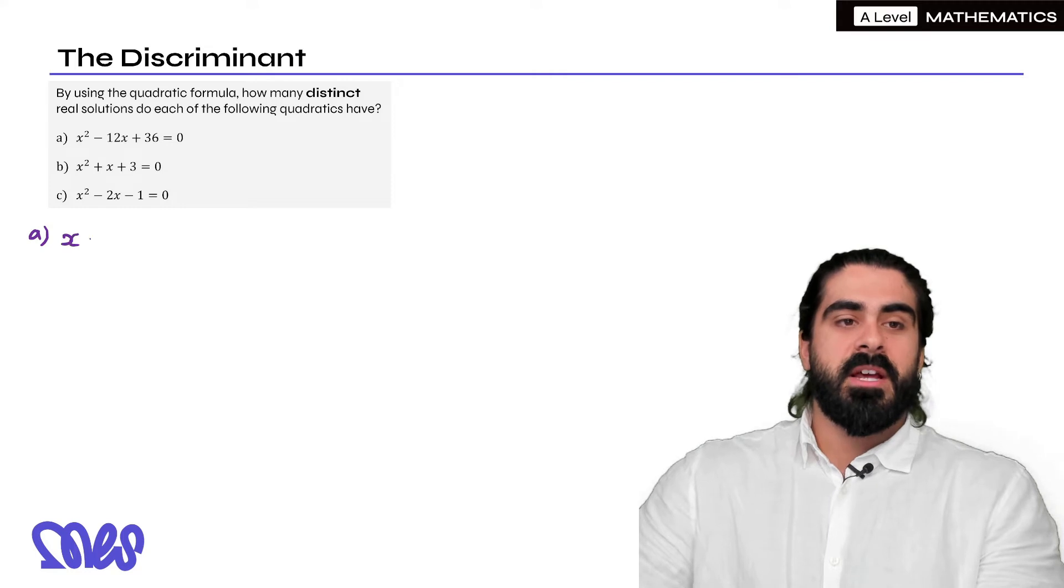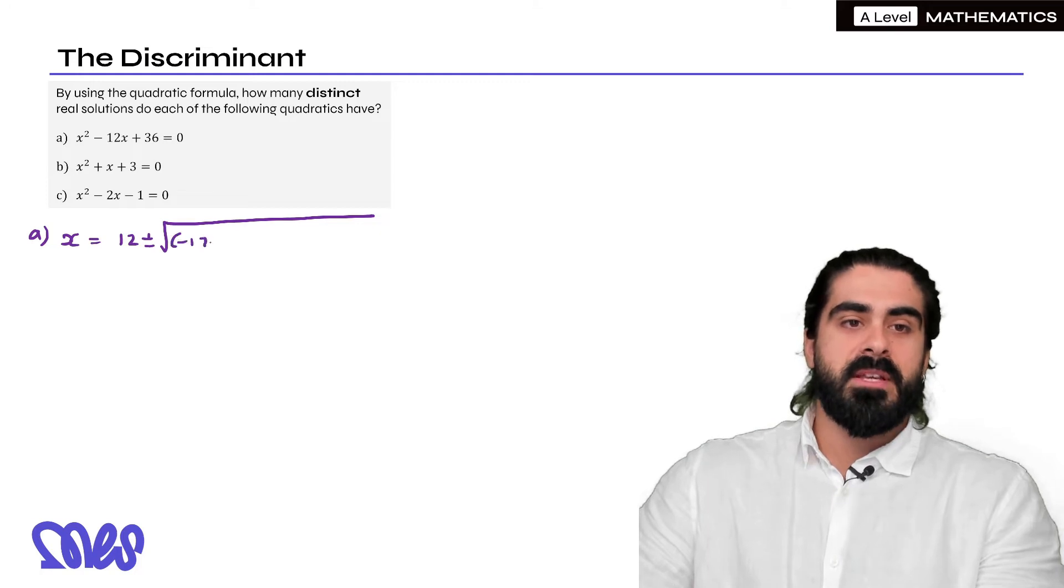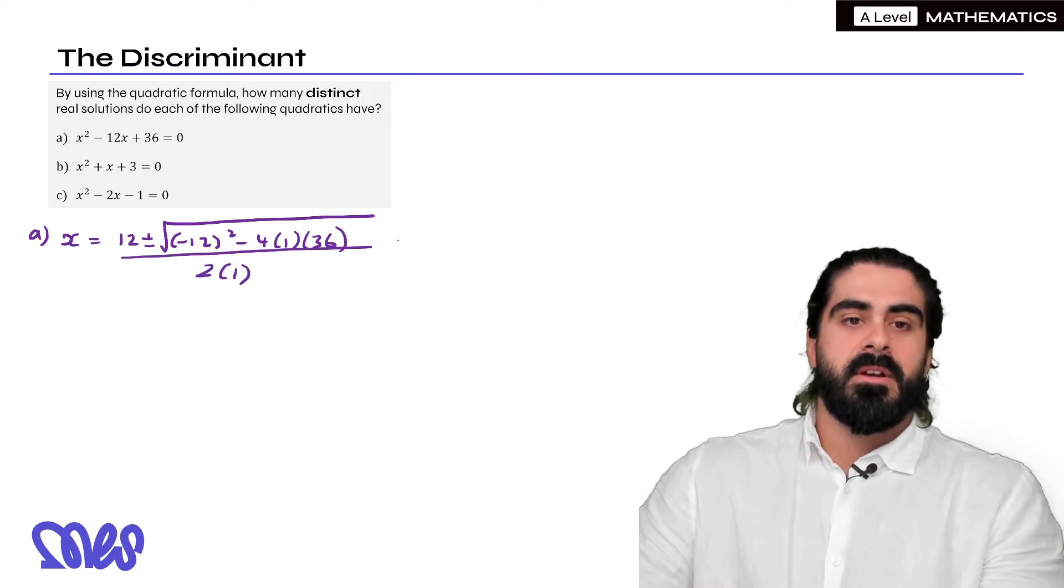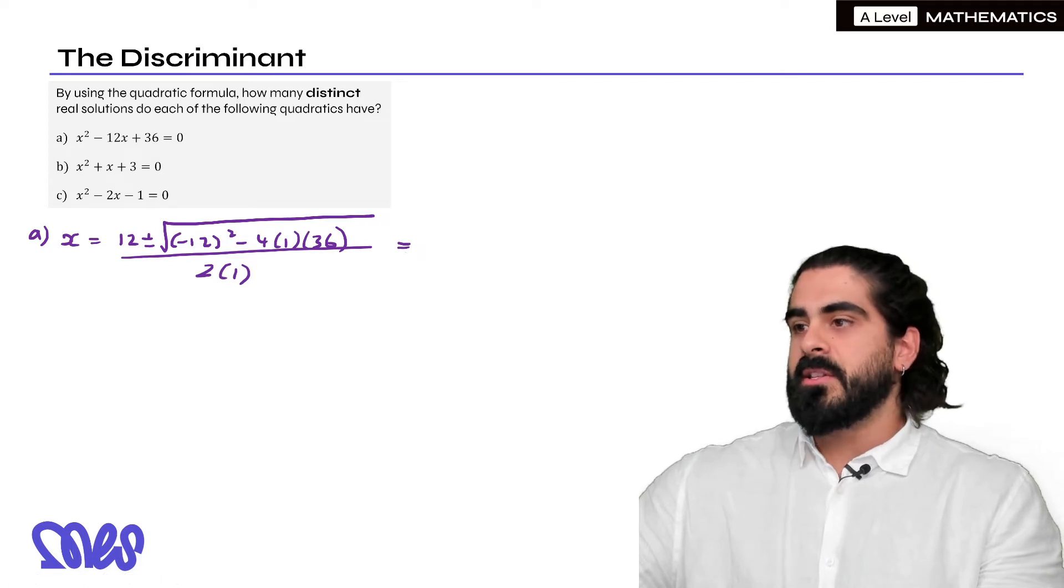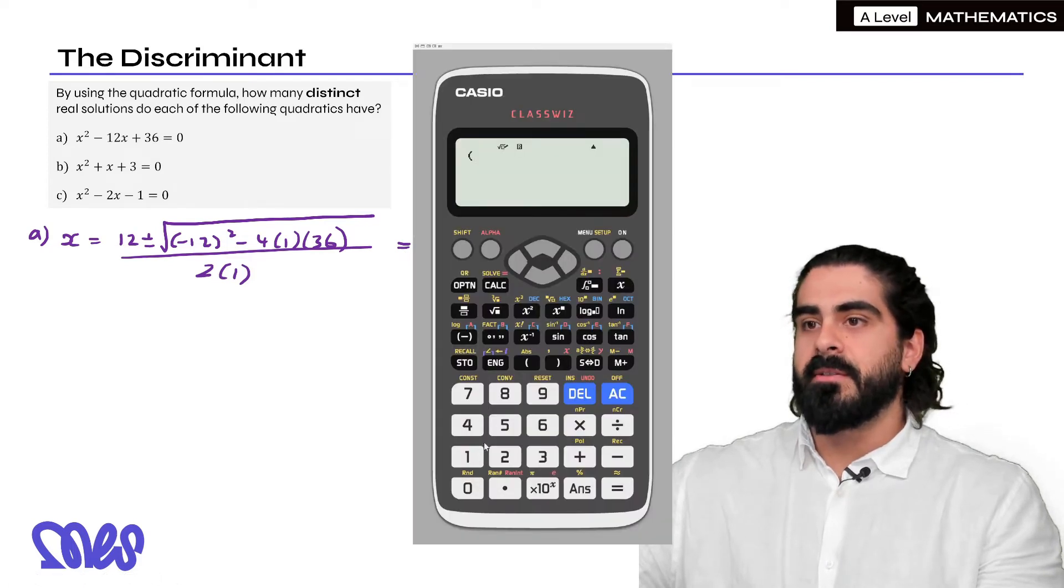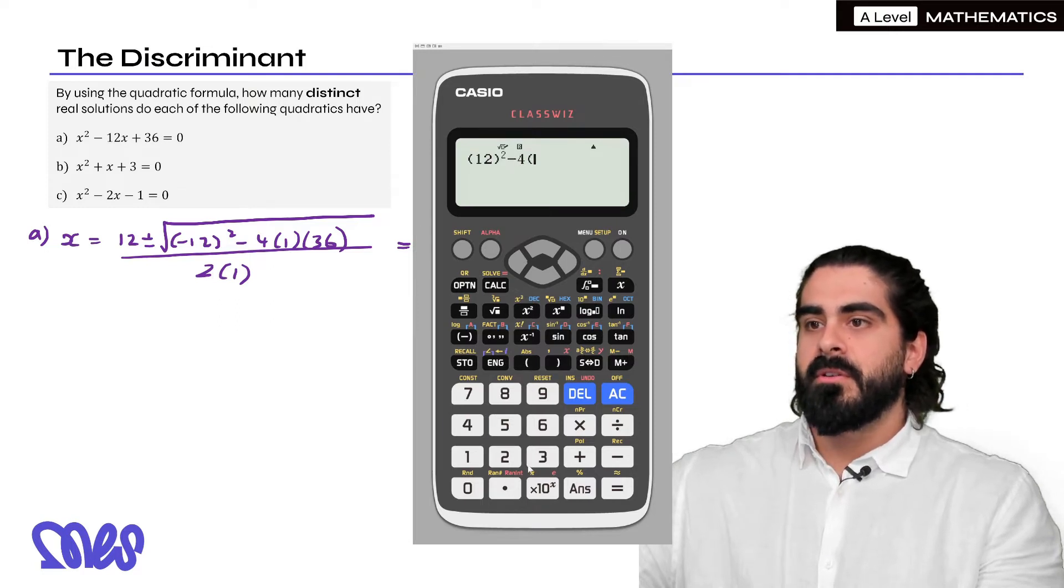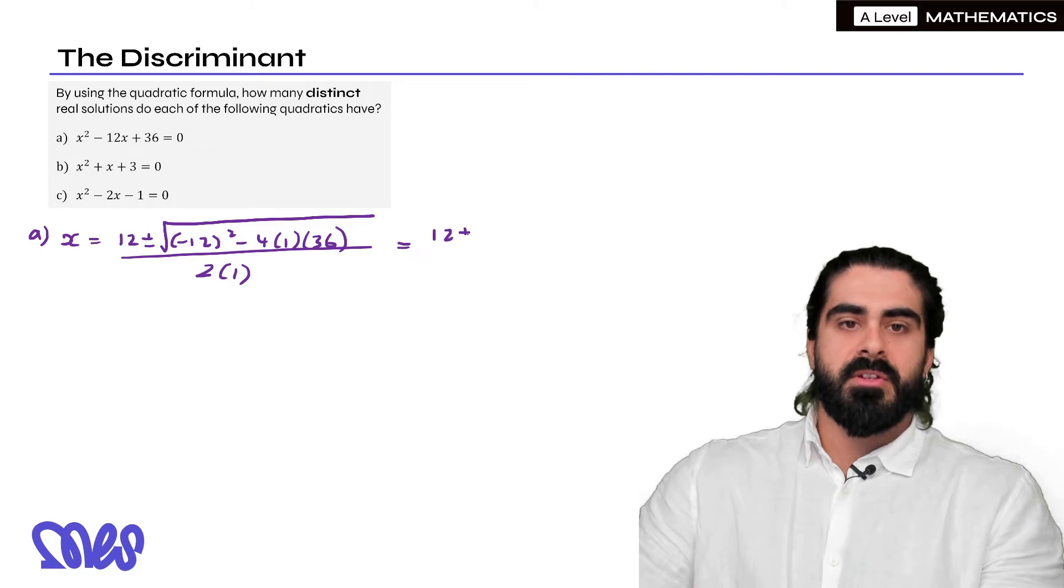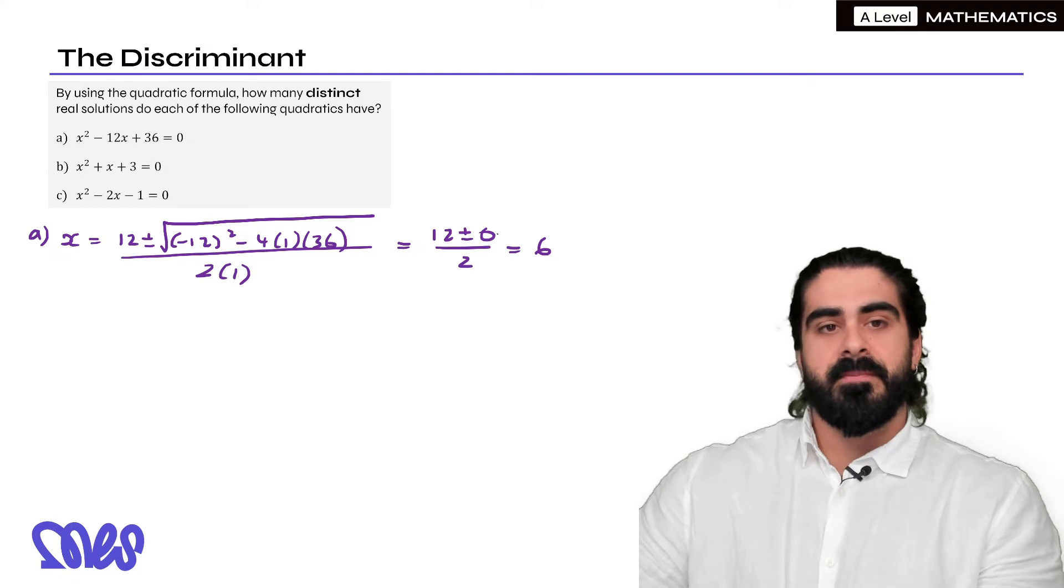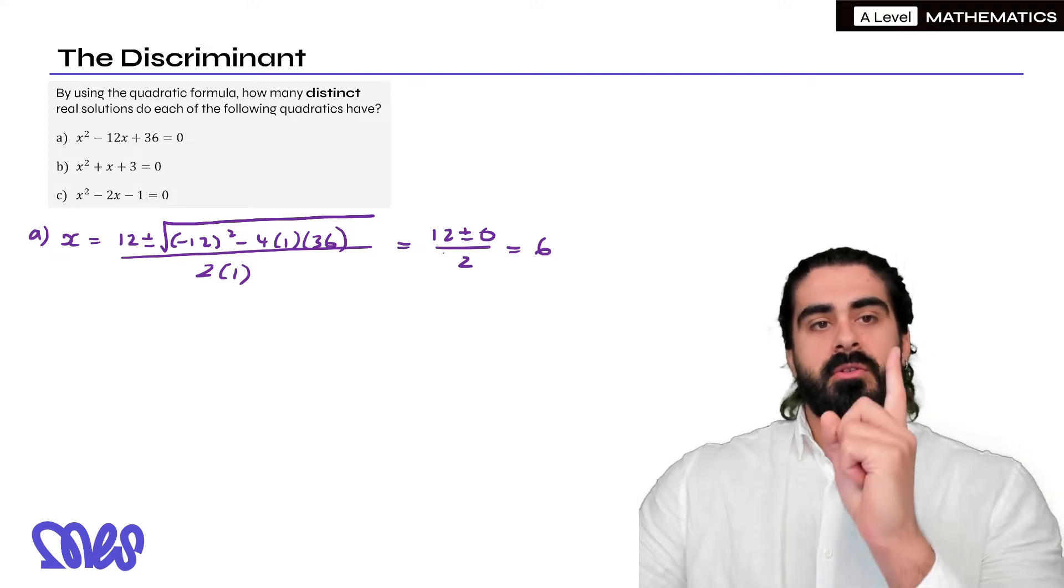For the first one we're going to have x equals negative b which will be 12 plus or minus the square root of b squared minus 4ac all over 2a. Now very important, you're going to see why this is relevant, is what's inside the bracket. So you've got 12 squared, the negative doesn't make a difference because we are squaring. So we have zero. So we have 12 plus or minus zero over 2 which just leaves us with 6. So one real root.